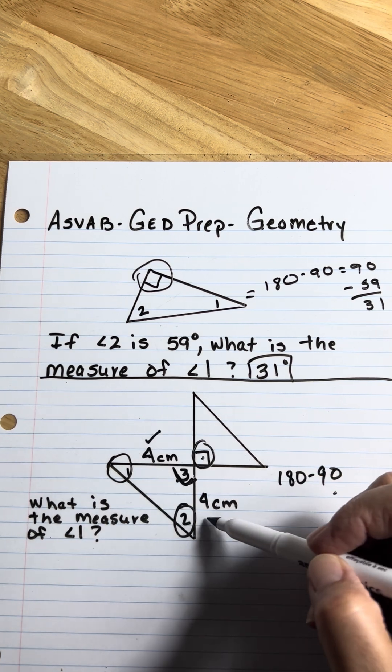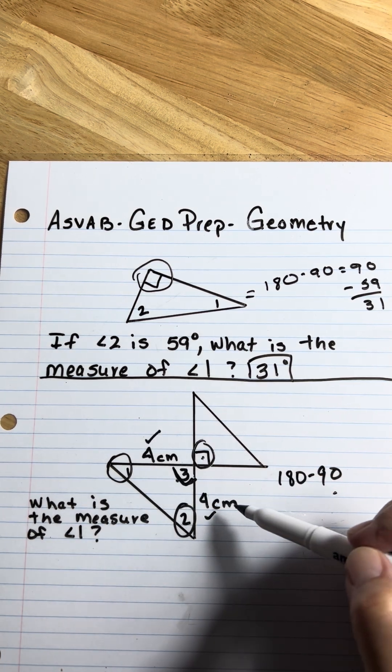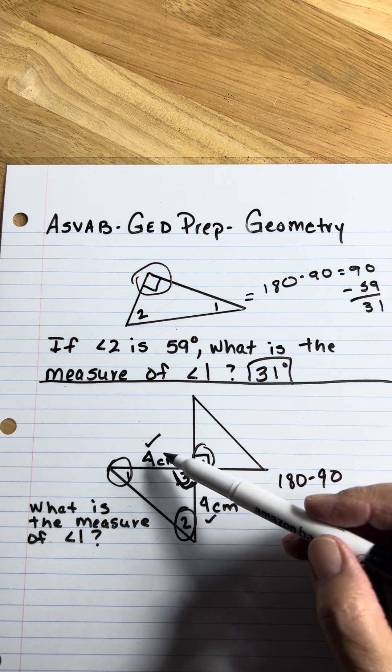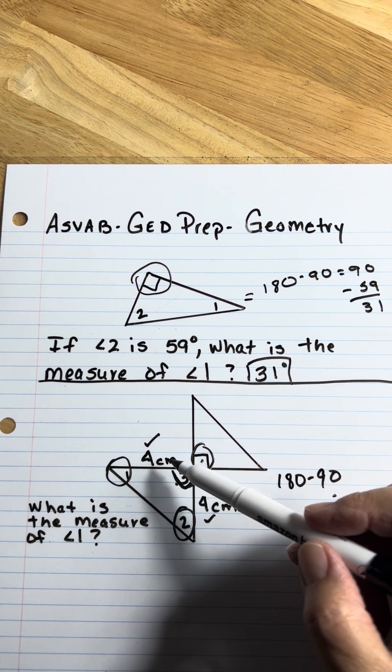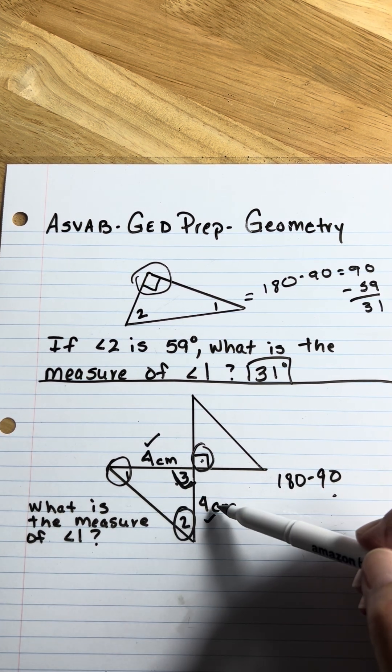Since this side and this side are equal, you had a rule in geometry that said angles that are opposite of congruent sides are also congruent.